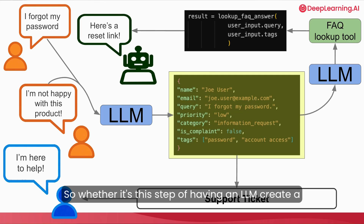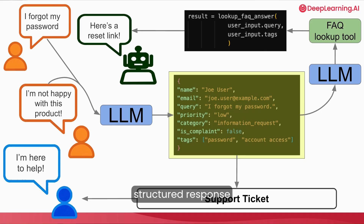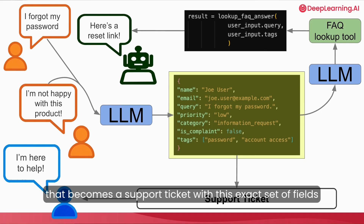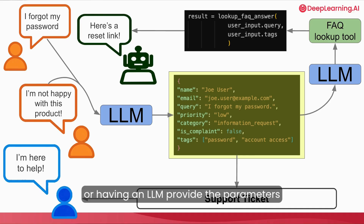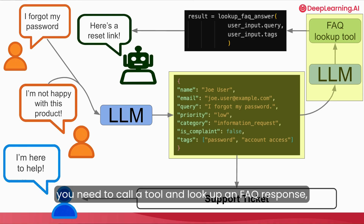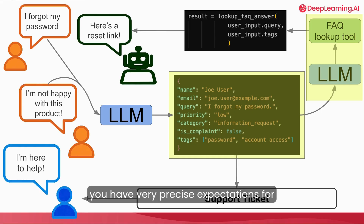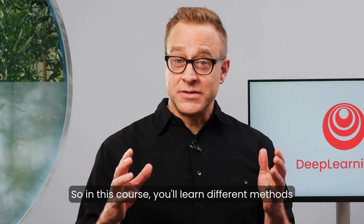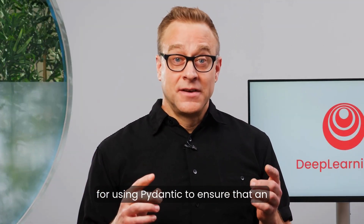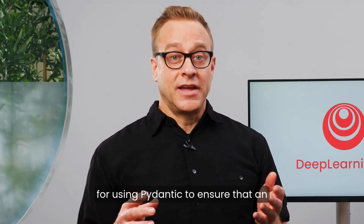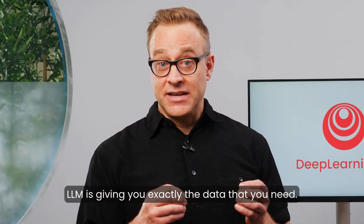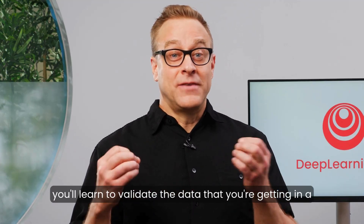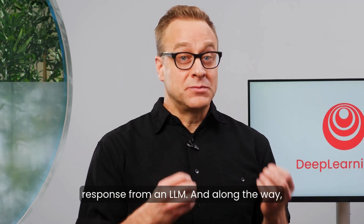Whether it's having an LLM create a structured response that becomes a support ticket with an exact set of fields and content, or having an LLM provide the parameters you need to call a tool and look up an FAQ response, you have very precise expectations for what each of those LLM responses needs to look like and what kind of data it needs to contain. In this course, you'll learn different methods for using Pydantic to ensure that an LLM is giving you exactly the data that you need — in other words, you'll learn to validate the data you're getting in a response from an LLM.